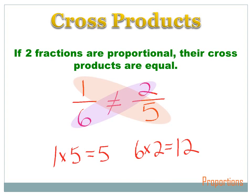Let's try another fraction: one over six. I know it doesn't equal two over five, but let's test this cross product concept. Multiply the numerator of the first by the denominator of the second: one times five equals five. Then multiply the denominator of the first by the numerator of the second: six times two equals twelve. Twelve doesn't equal five, so these two fractions are not proportional.